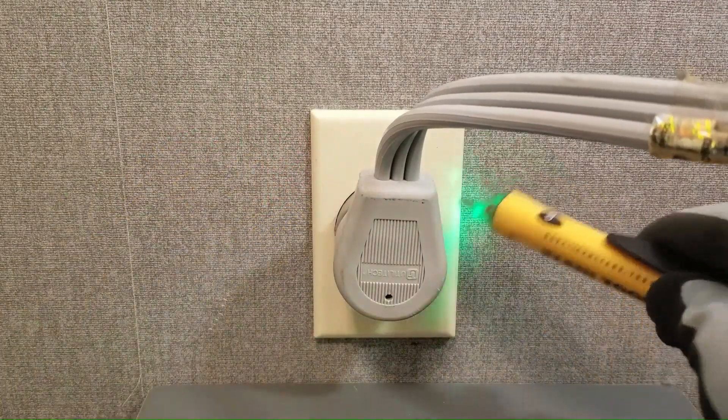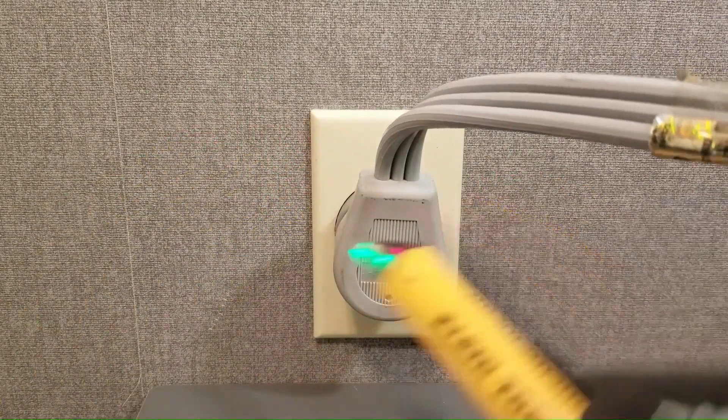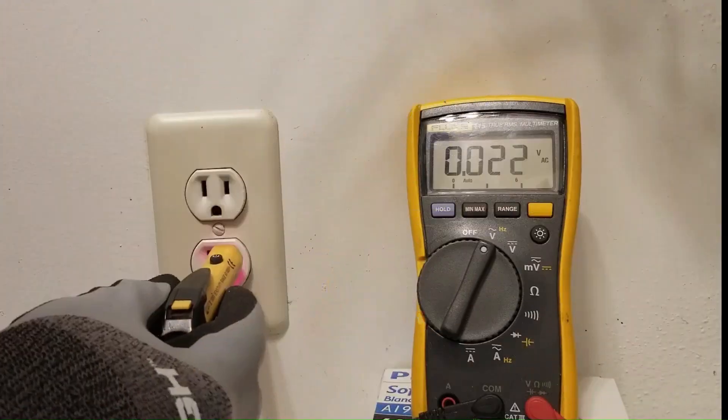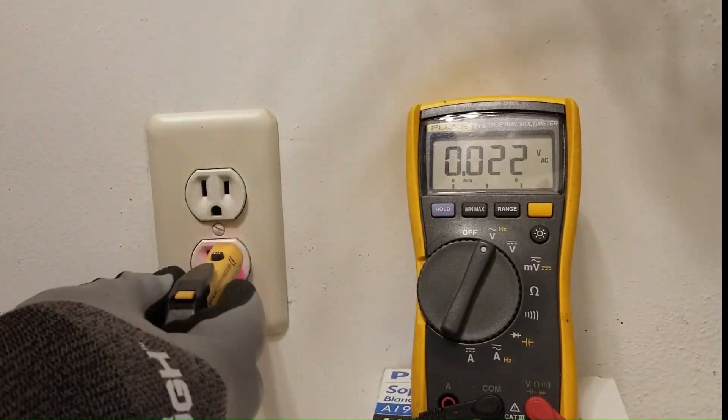In this video I will show you how to detect a floating or loose neutral in both 240 volt circuits as well as 120 volt circuits using a simple voltage pen.